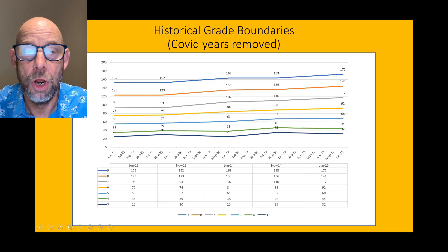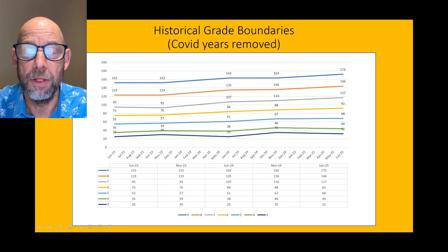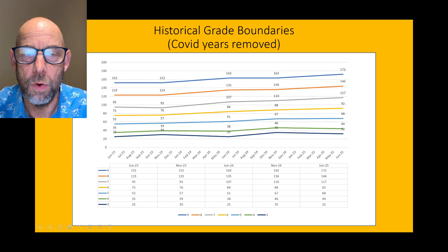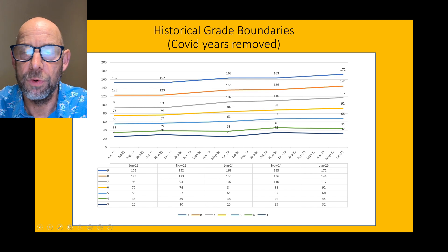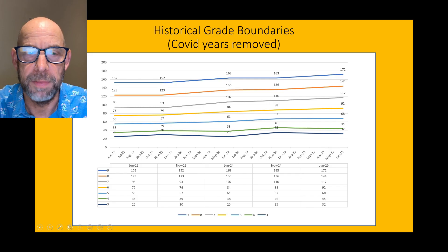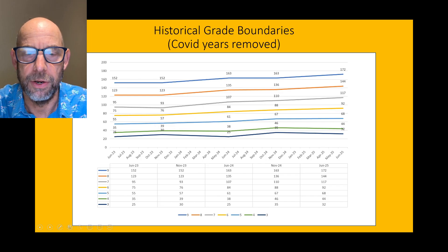And then for those of you going for that vital grade 4, that vital pass — historically the boundaries have been 38, 46, 44. I reckon you want to be aiming at 46 to be safe, but maybe you should aim for 50. Maybe you should be aiming for 25% on each of the papers to get your grade 4.